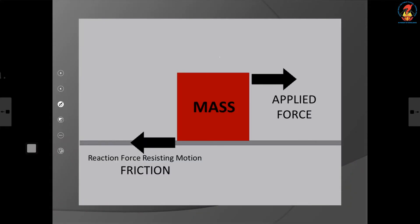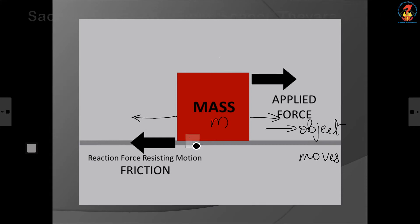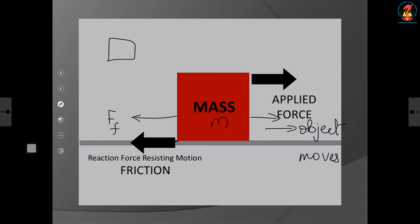This is the applied force. Suppose this is an object of mass m. This is the direction of the applied force, and in this direction the object moves. Frictional force acts between the two surfaces in contact and is opposite to the direction of motion. Normally frictional force is represented by FF. Suppose an object is moving in the upward direction, frictional force will be acting in the downward direction.